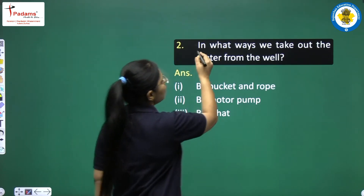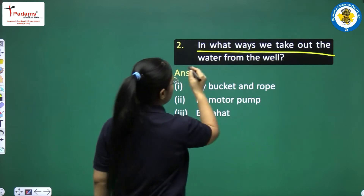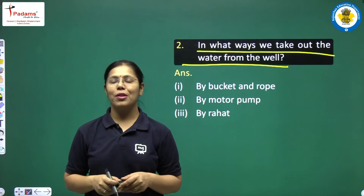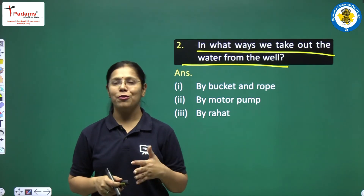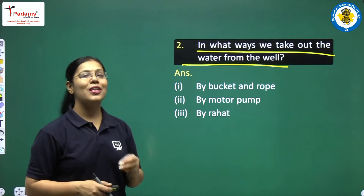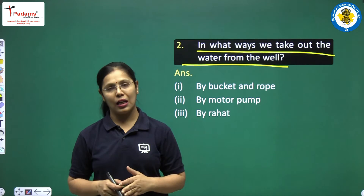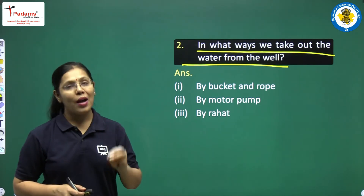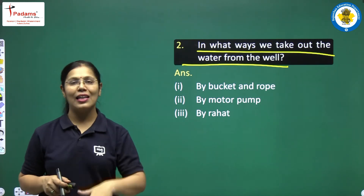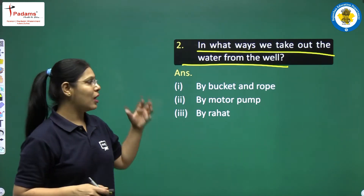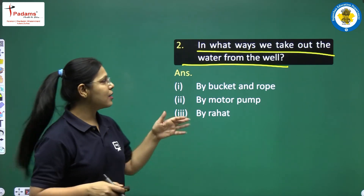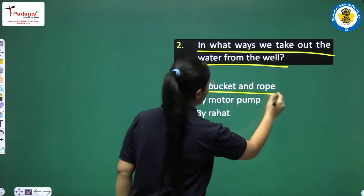Question number 2 is: in what ways can we take out water from the well? How can we take out water from the well? What are the different ways to do this? There are different ways through which we can draw water from the well — some of them are through bucket and rope.